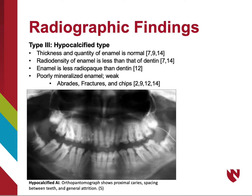In type 3, the thickness and quantity of enamel is normal, but the radiodensity is even less than that of dentin. This poorly mineralized enamel is weak and subjected to fracture, abrasion, and chips. The pantomograph featured here shows the enamel less radiopaque than its underlying dentin. This patient also displays proximal caries, spacing, and general attrition. The altered radiodensity of the enamel can make it hard to distinguish certain radiographic signs.